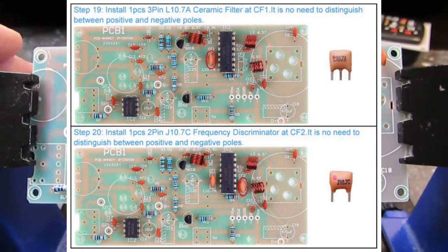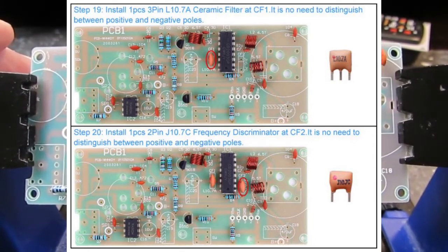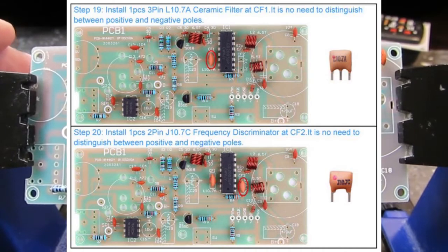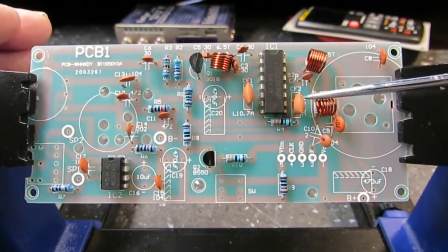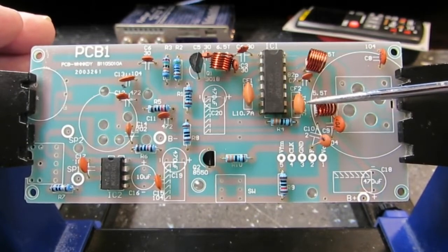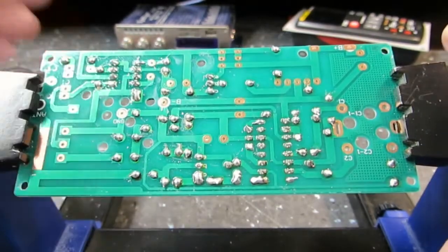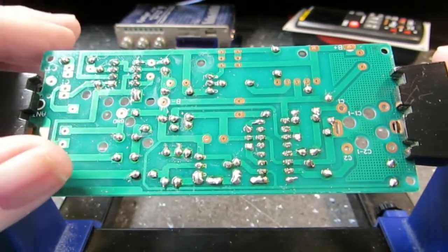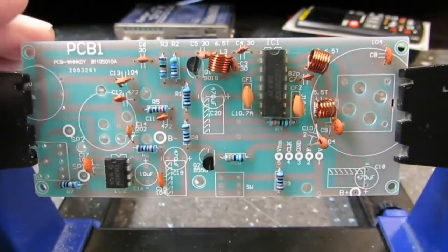We have step 19 and 20 done now. Top one is L10.7A ceramic filter CF1. That is this one right here. And the other one is here. J107C. 10.7C. It's a discriminator. It's CF2. And that's what that is. They are both soldered in, as you can see. Very nicely. On to the next step.